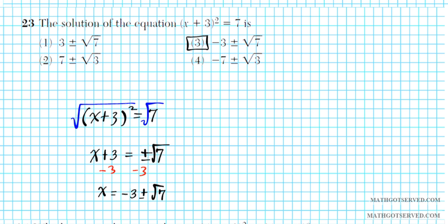For problem 23, you simply use the square root property to get x isolated. Do not forget: anytime you take the square root of a square, you have to introduce plus or minus into the equation. If you do that and get x isolated, you end up with option number three as your final result.